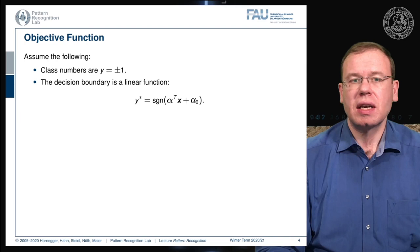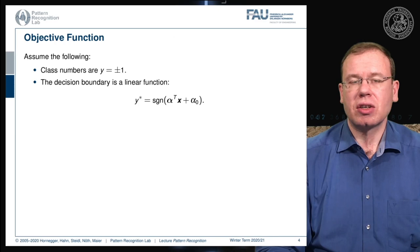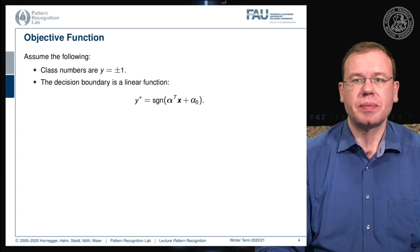We assume that the class labels are plus and minus one and the decision boundary is a linear function given as y* = sign(αᵀx + α₀). The vector α is the normal vector of the hyperplane and α₀ is the offset that moves the plane away from the origin. We compute the signed distance of the vector x to this hyperplane and map to its sign, which is either minus one or plus one.